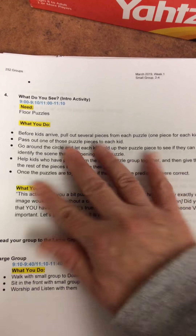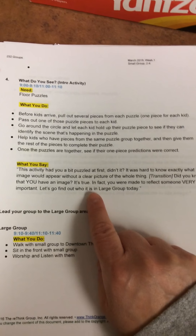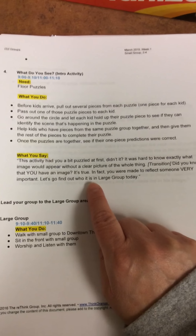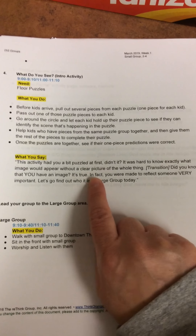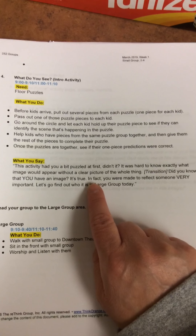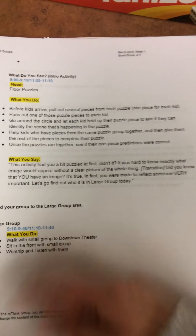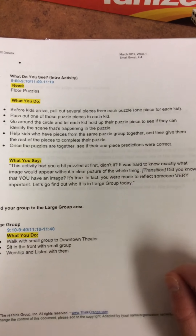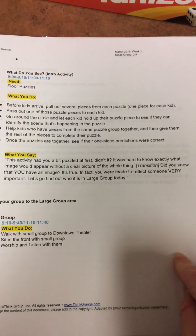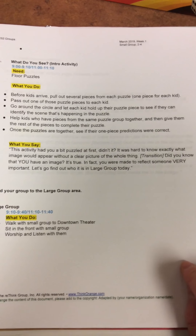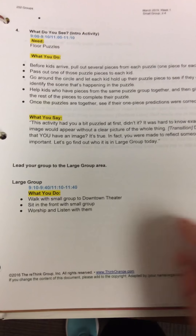You've got two puzzles on your cart and you can split kids into two groups depending on how big your group is. Close that activity down by saying: 'This activity had you a little puzzled at first, didn't it? It was hard to know exactly what image would appear without a clear picture of the whole thing. Did you guys know that you have an image? In fact, you were made to reflect someone very important.' Then head down to large group to learn about that.